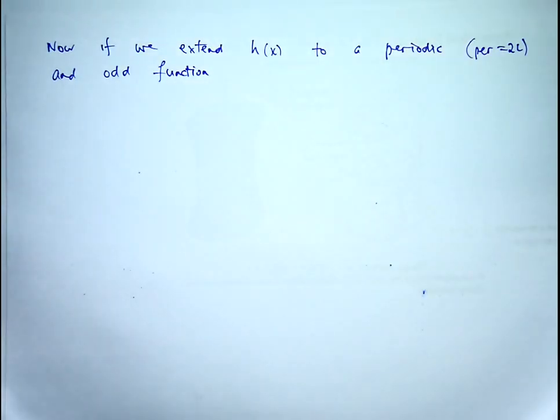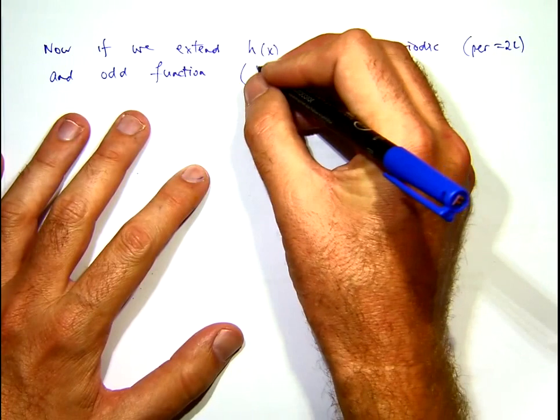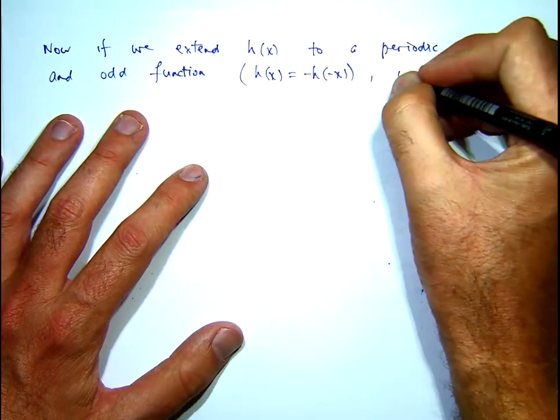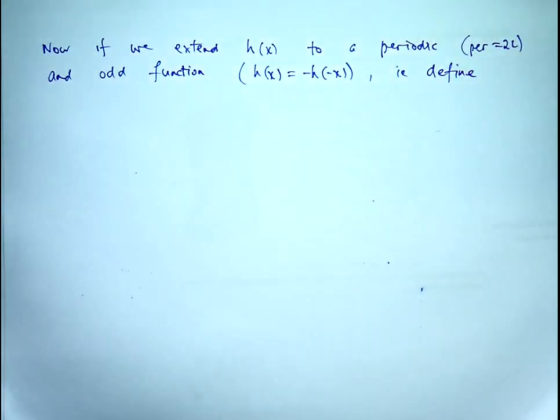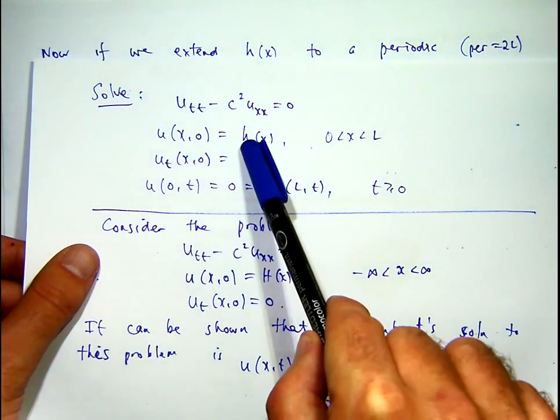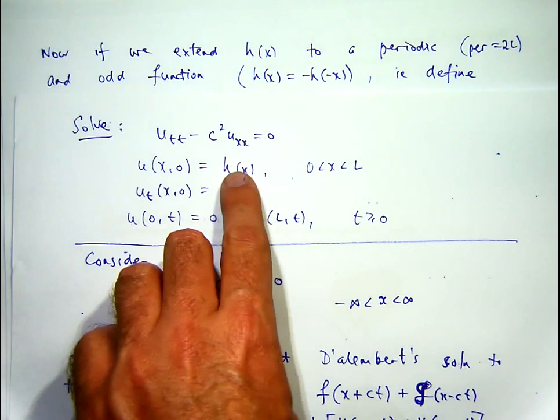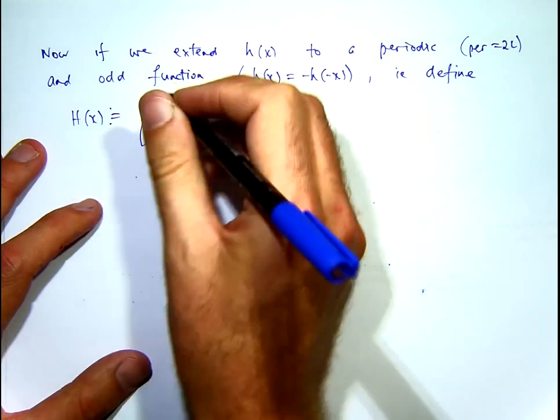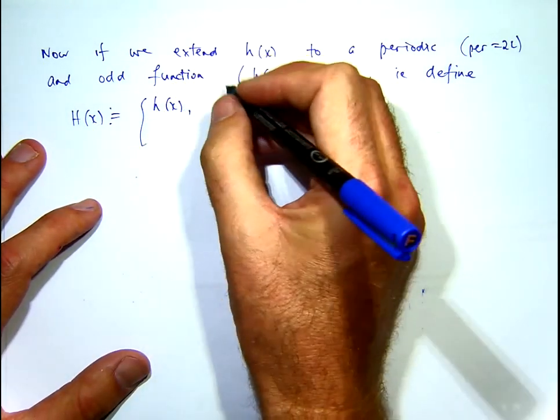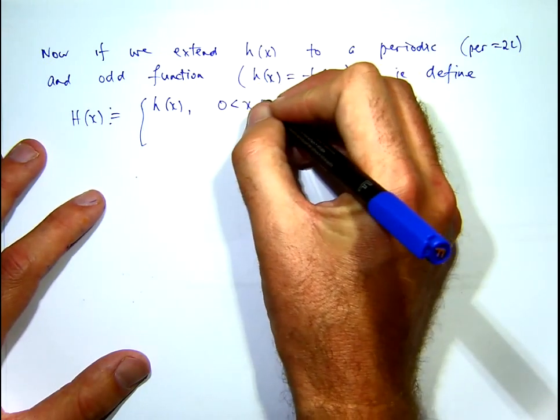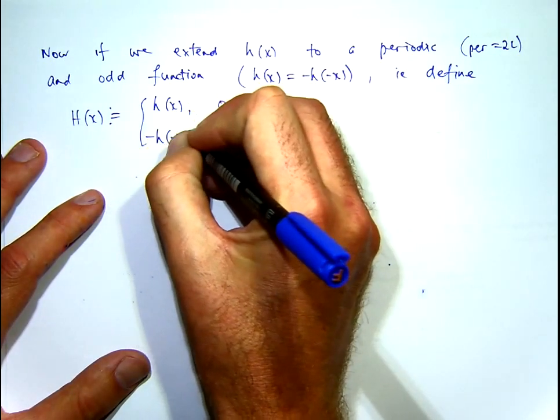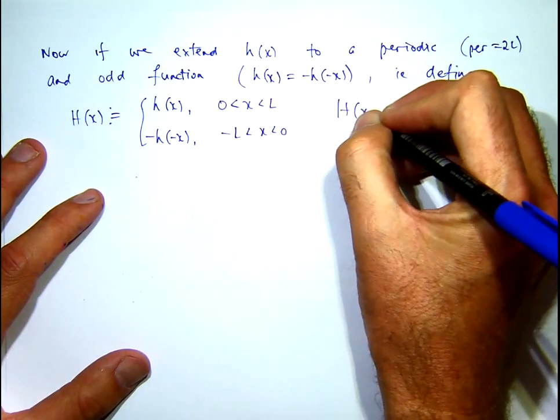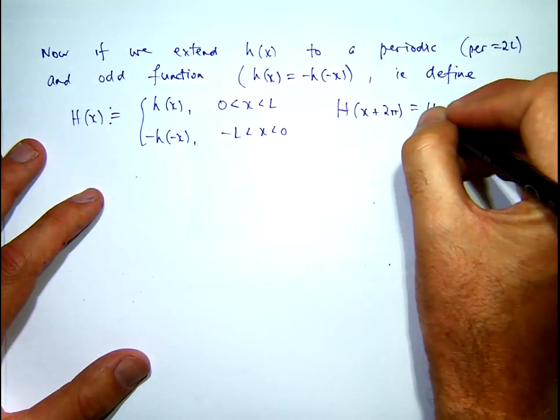Okay, a periodic and odd function. So we're going to define this function here and relate it to... So big H is going to be the odd periodic extension of little h.